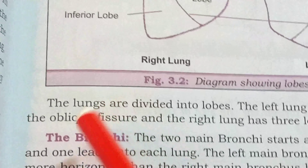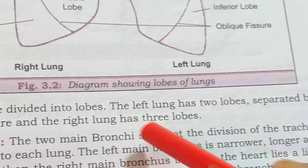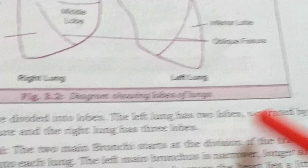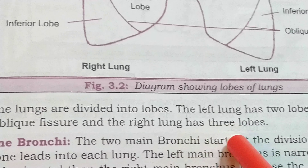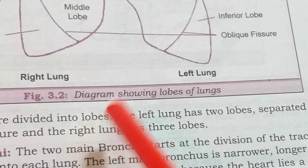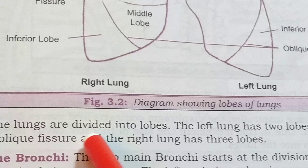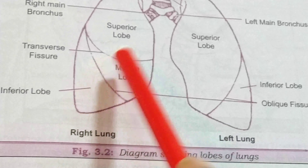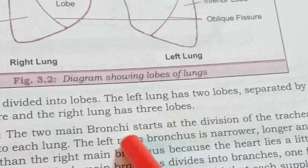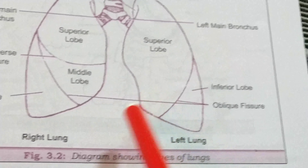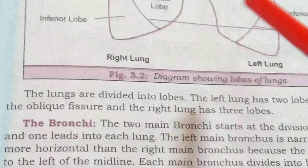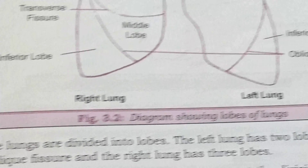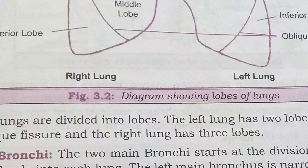The lungs are divided into lobes. The left lung has two lobes separated by the oblique fissure, and the right lung has three lobes. I hope all of you understood — for today, up to this portion.